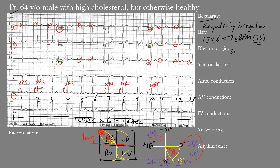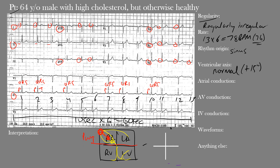So the rhythm is originating from the sinus node — this is a sinus rhythm. Now how about the ventricular or QRS axis? You should have gotten a normal QRS axis; the actual axis here was positive 15 degrees, which is normal. We say 'ventricular' because we're looking at the QRS complex, and you may also hear it called the QRS axis. The reference points are: 0 degrees, +90 degrees, ±180 degrees, and -90 degrees.